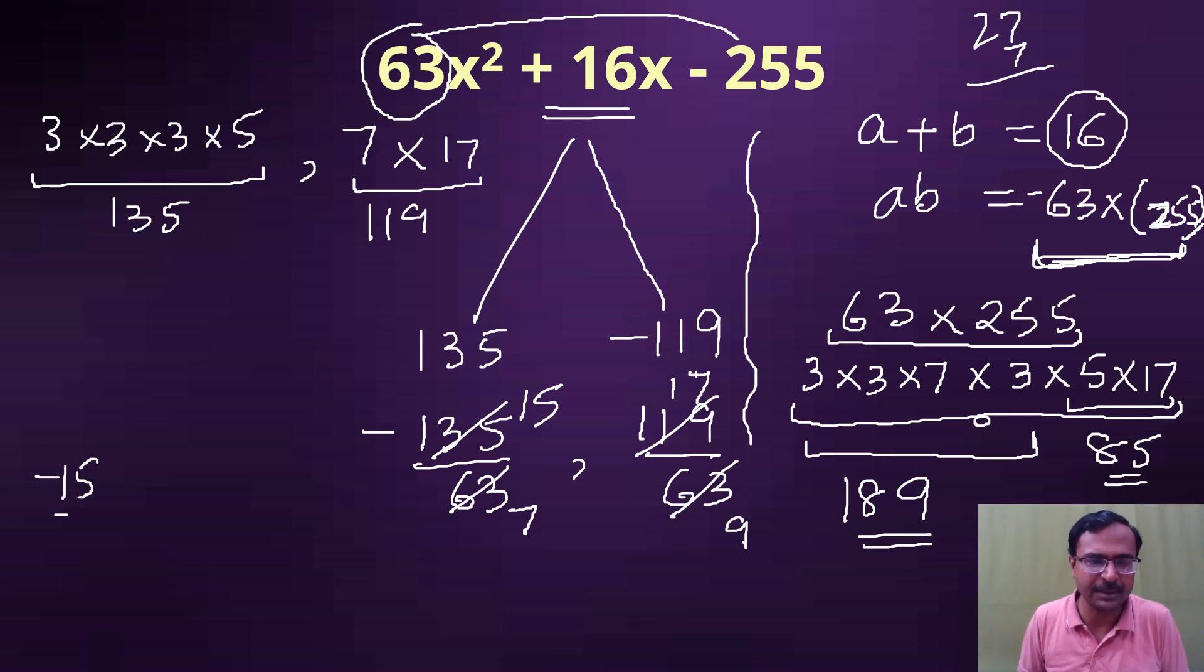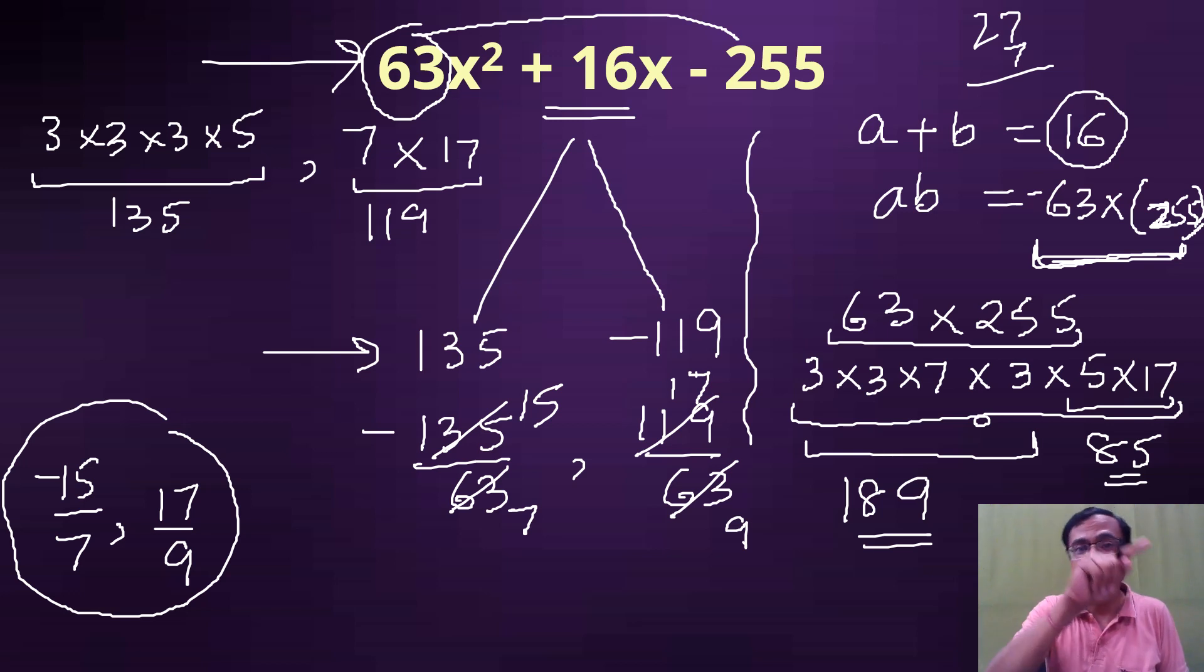Look at the solutions of this quadratic equation - a huge quadratic equation - and we managed to split the middle term very easily: 135 and minus 119, using the factors of the product of 63 and minus 255. Look for more videos like this, and you can make the questions yourself and practice.